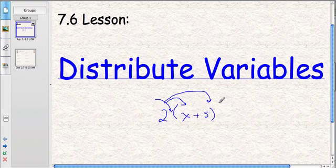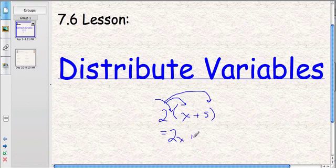Inside the brackets, there's nothing that we can do. We can't combine like terms. So we would multiply 2 times x, which is 2x, and 2 times 5, which is 10. And so that's just an example of what we've learned already.